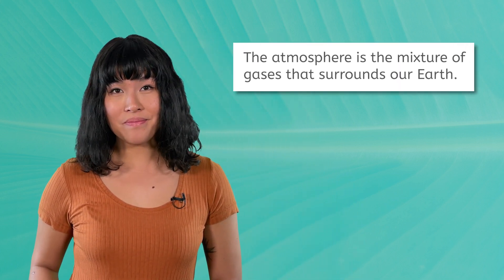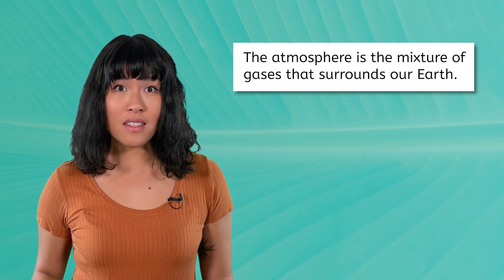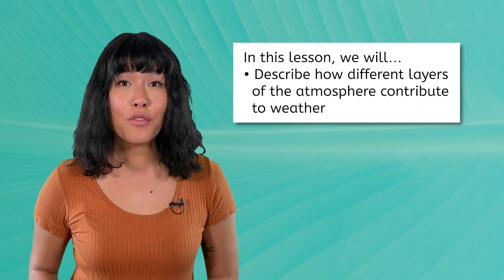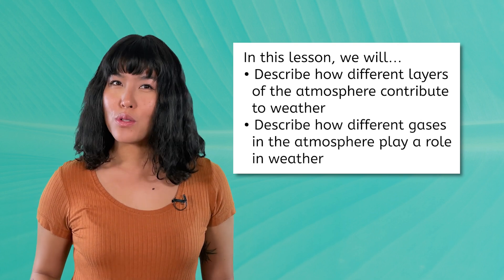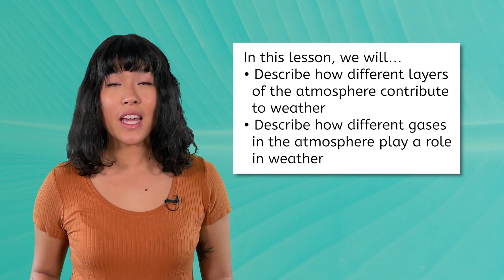Sometimes, the weather conditions can be different from what we would normally expect based on climate. For example, there might be an unexpectedly warm day in the middle of winter, when the climate is normally much colder. These unexpected weather changes are usually short-lived, and can be explained by atmospheric conditions. In fact, both weather and climate describe conditions in our atmosphere. The atmosphere is the mixture of gases that surround our Earth. In this lesson, we will describe how different layers of the atmosphere contribute to weather, and how different gases in the atmosphere play a role in weather.